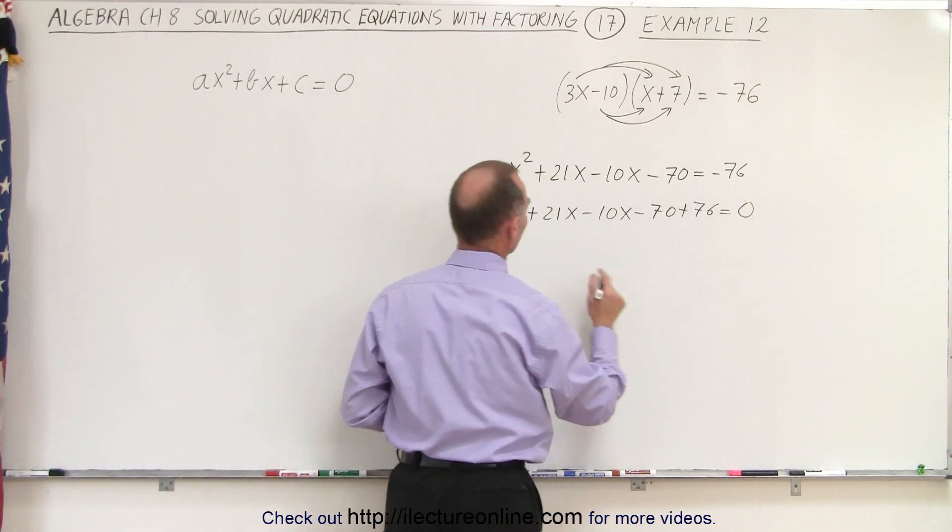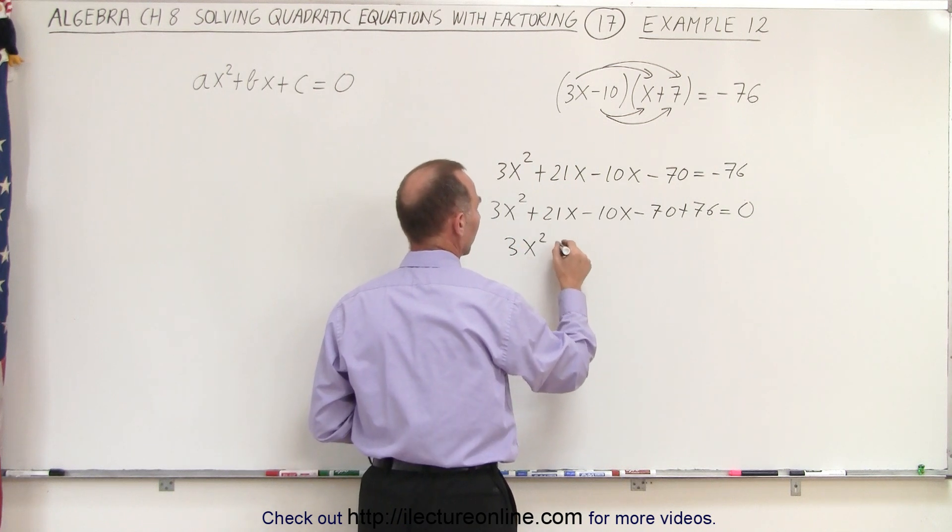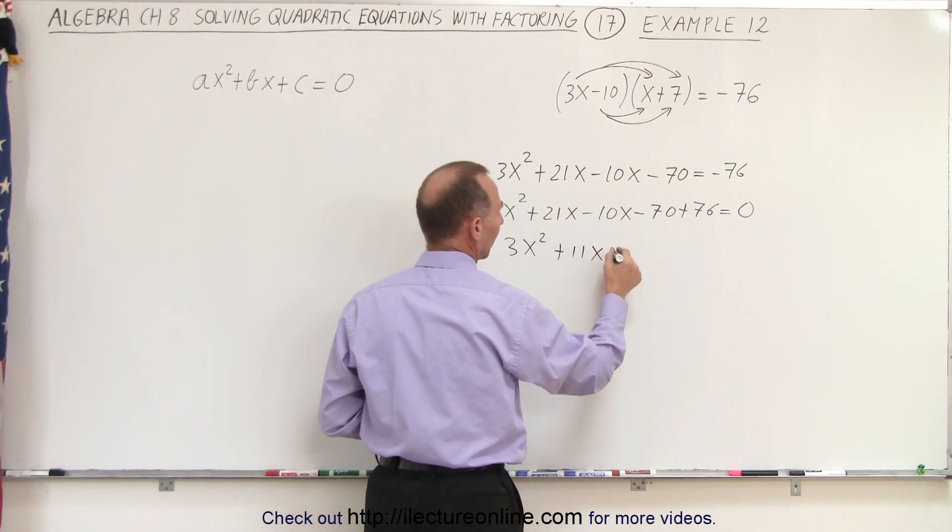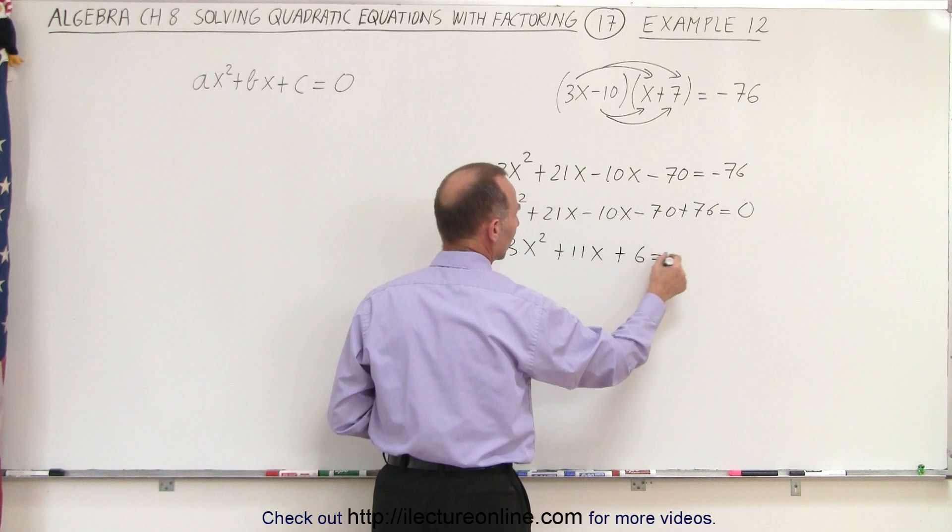And when we do that, we end up with 3x squared plus 11x plus 6 equal to 0.